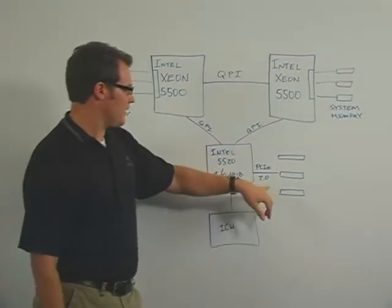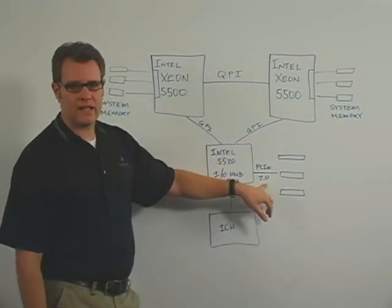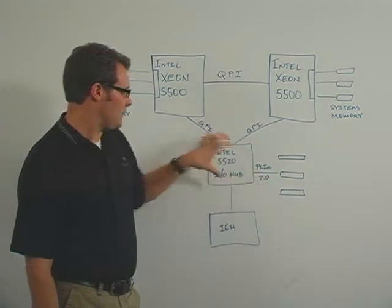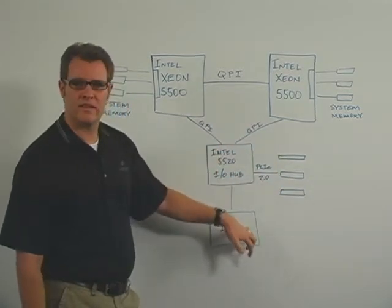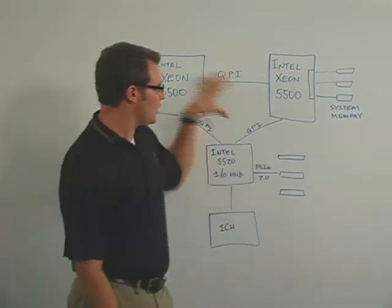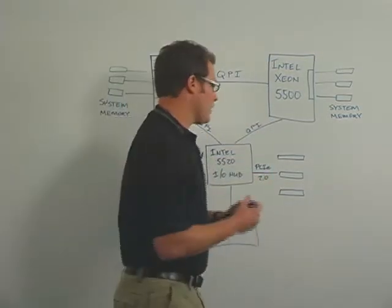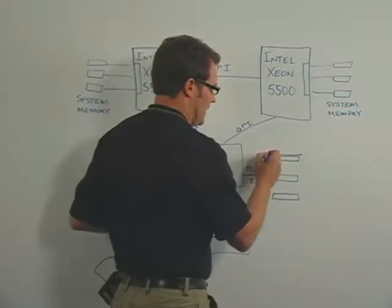On the IOHUB there is the PCIe 2.0 connections. It's moved up here into the IOHUB instead of on the Southbridge like it used to be. So it's closer to the processors and the memory. This is where the Emulex HBAs would go.